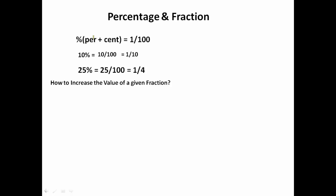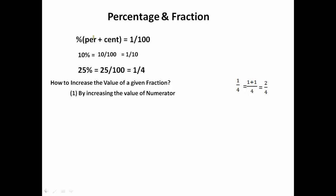Now let's consider you have 1/4 as a fraction and someone asks you to increase its value by making changes to the numerator and denominator. There are two possible ways. First, by increasing the numerator: if we add any number except 0 to the numerator, the fraction increases — so 1/4 becomes 2/4, which is greater. Second, by decreasing the denominator: 1/4 becomes 1/3 when we decrease the denominator by 1, and 1/3 is greater than 1/4.